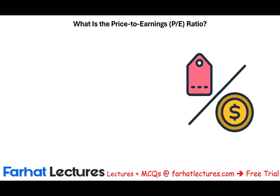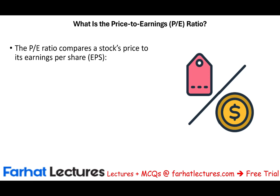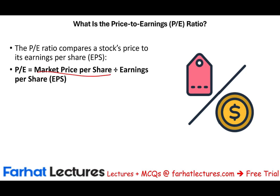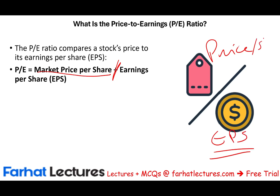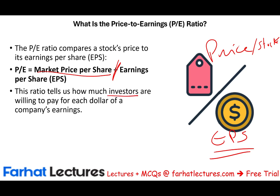So what is the price-to-earnings ratio? It's very simple: it's the market price of the stock divided by earnings per share (EPS). This tells us how much investors are willing to pay for each $1 in the company's earnings.